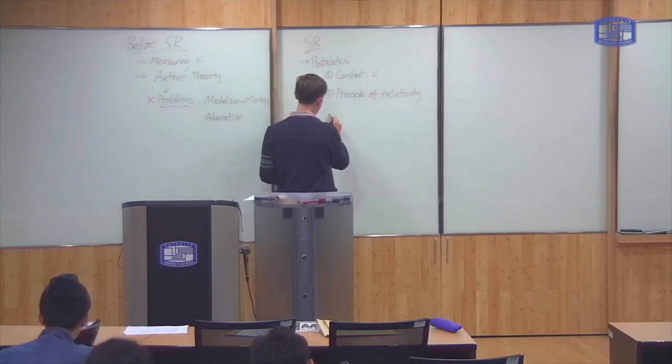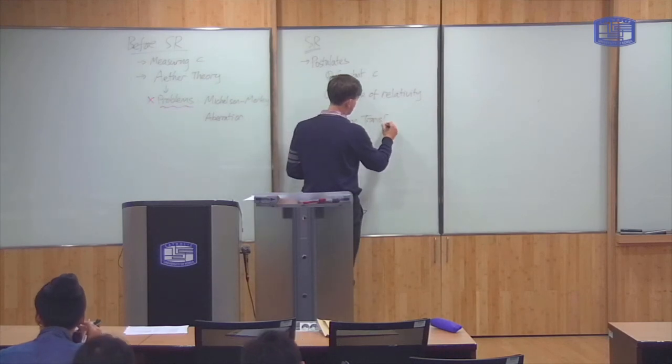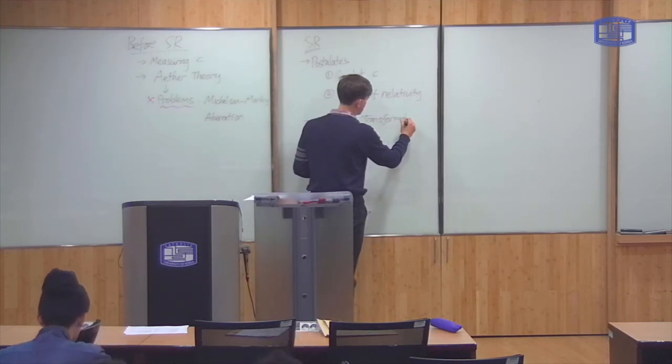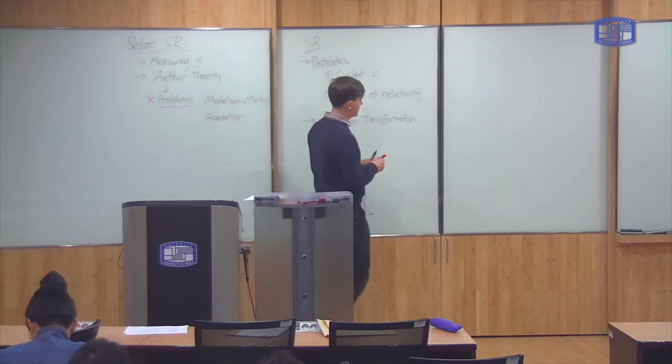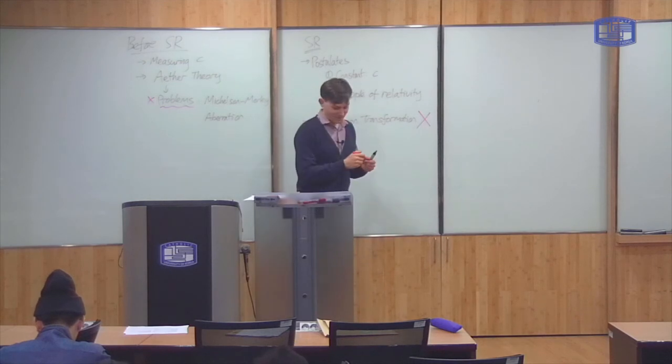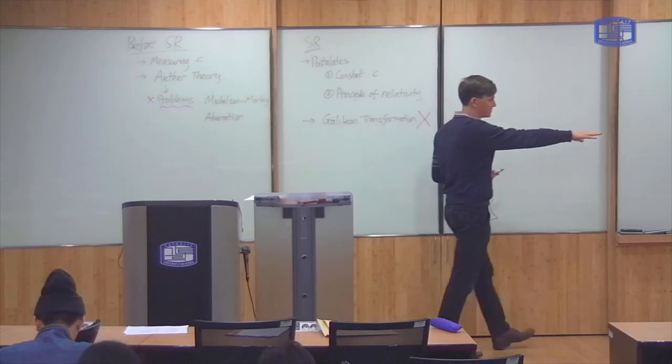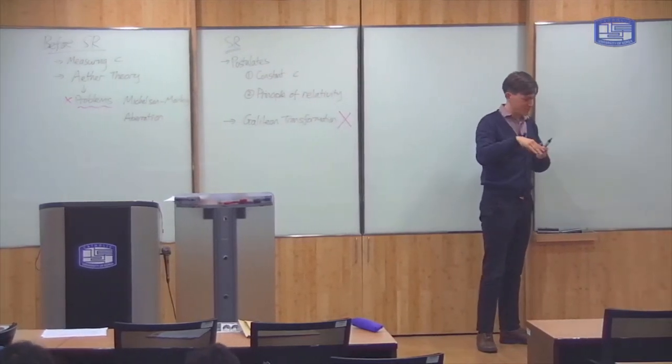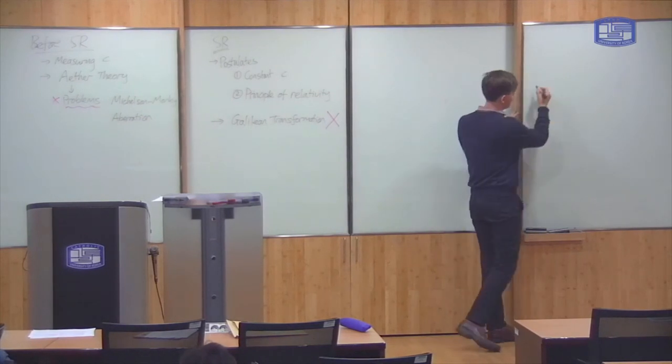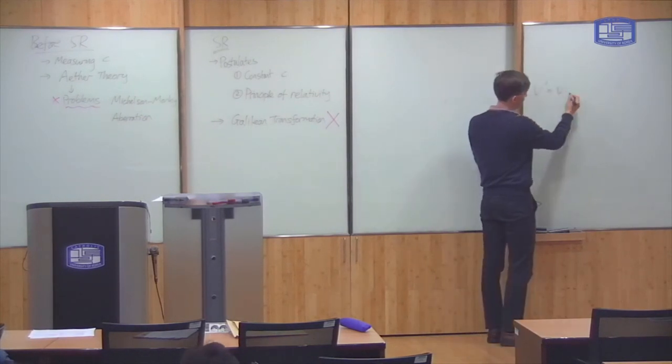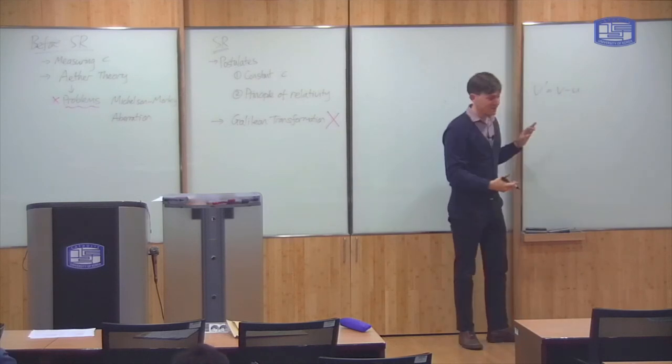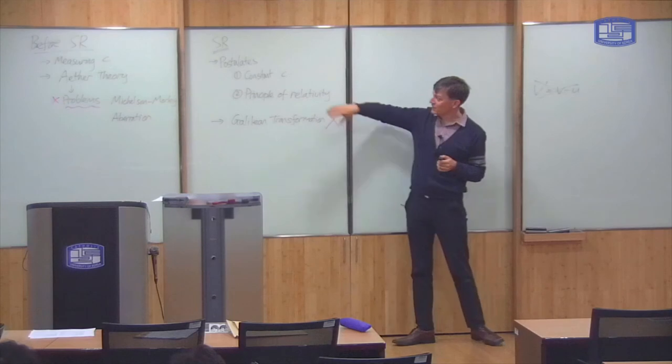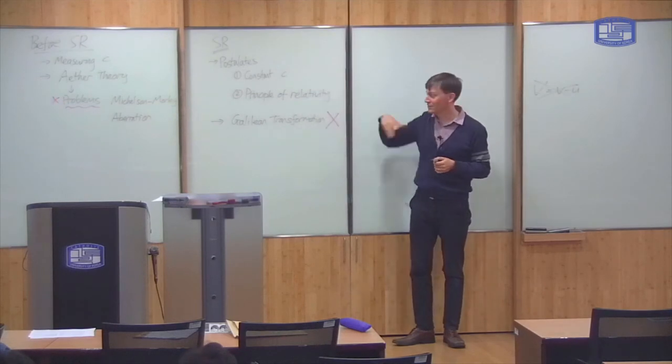The first thing is that you must reject the Galilean transformation. The Galilean transformation, which is the simple one. You know, if I'm moving at 10 meters per second and you're moving at 5 meters per second, then the relative speed between us is 5 meters per second. The idea that you can just simply add velocities like this. This is not true, and it can't be true if these postulates are true.